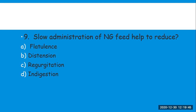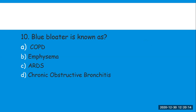Next question: slow administration of NG (nasogastric) feed helps to reduce — options are: A) flatus, B) distension, C) regurgitation, D) indigestion. The right answer is regurgitation. When we administer NG feed slowly, it helps to prevent the backflow, also known as regurgitation.